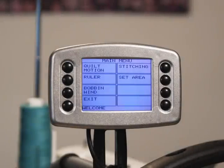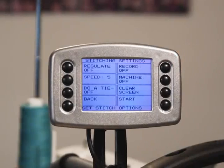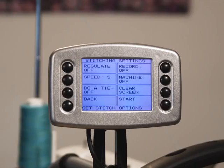The stitching option allows you to select regulated or non-regulated mode for freehand quilting, turn on your record mode, select stitch speed, do a tie-off, clear the record screen, and start or stop stitching and recording.